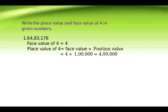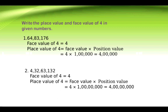Write the place value and face value of 4 in the given numbers. First number: 64,83,176 — the face value of 4 is 4. Place value of 4 = face value × position value = 4 × 1 lakh = 4 lakh. Second number: 4,32,63,132 — the face value of 4 is 4. Place value of 4 = 4 × 1 crore = 4 crore.